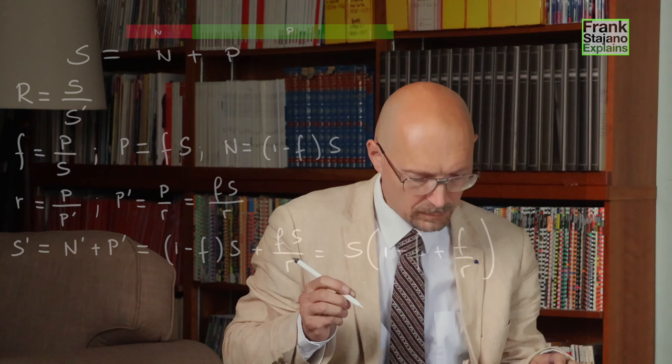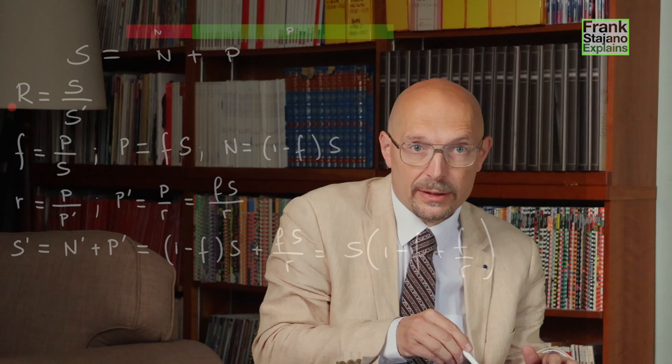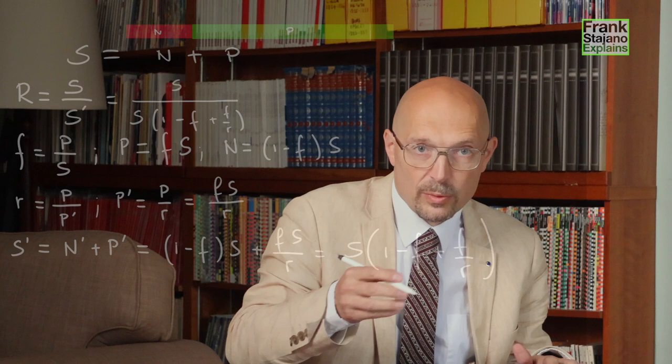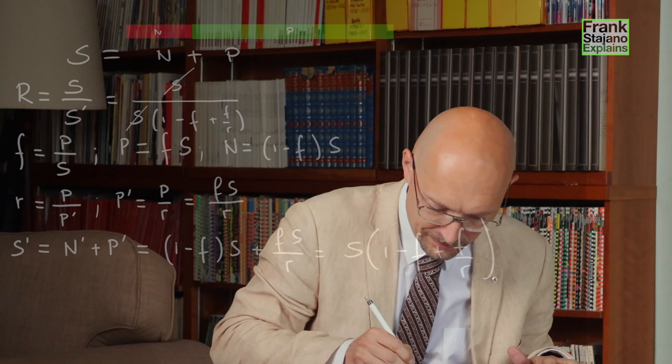Now, if we put this all together, the overall speed up ratio for the whole system, big R, is equal to the s before the improvement divided by s after improvement, which we've just derived over here. And this gives us... where this s is at the numerator and the denominator simplify, of course, and this leaves us with... which is Amdahl's law.